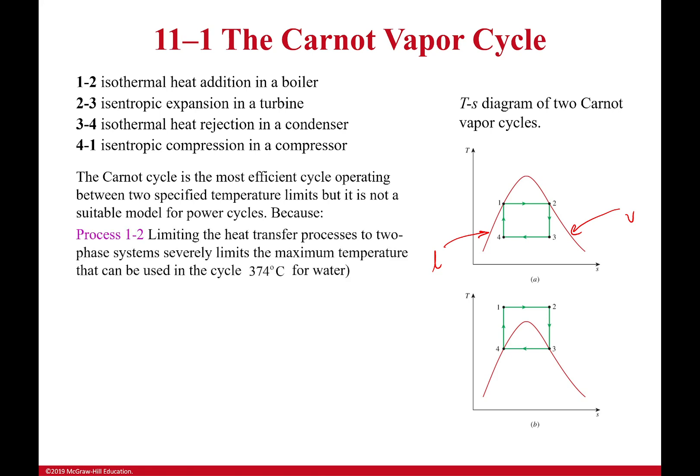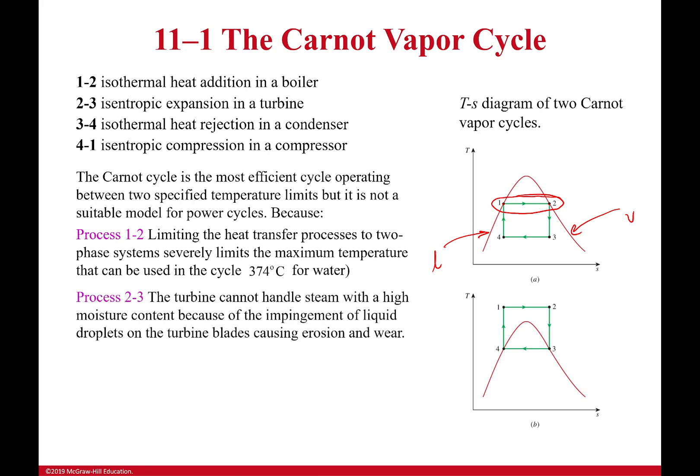First off, process one to two. So, we have to limit our heat transfer. Because if we go beyond this, we start having a very different system. When we're heating it from one to two, we have an issue that we're trying to stay inside of this phase change line. So, that means our max temperature there could be about 374 degrees Celsius for water.